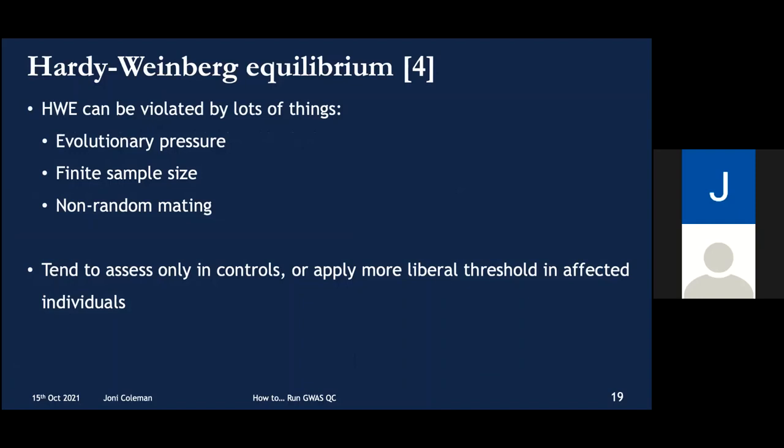Now, Hardy-Weinberg equilibrium is an idealized mathematical abstraction, so there are lots of plausible ways it can be broken — most notably by evolutionary pressure. As a result, in case-control data, it's typically best to assess it just in controls, or to be less strict with defining violations of Hardy-Weinberg in cases. That said, in my experience, genotyping errors can produce very large violations of Hardy-Weinberg, so if you exclude the strongest violations, you tend to be removing the biggest genotyping errors.